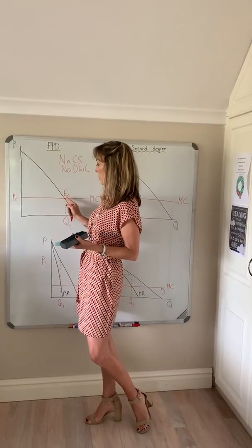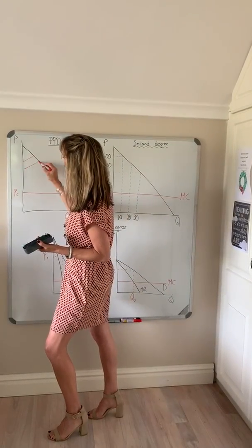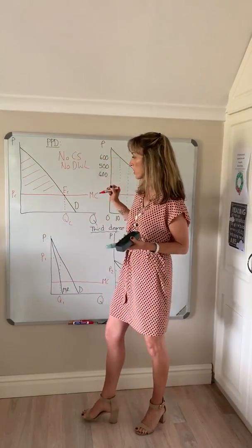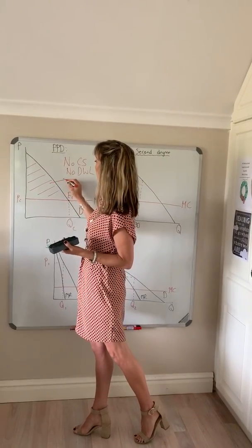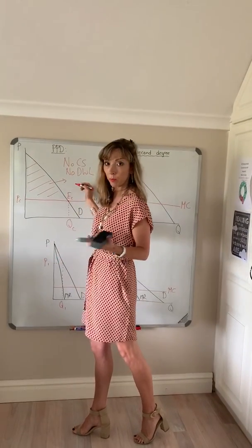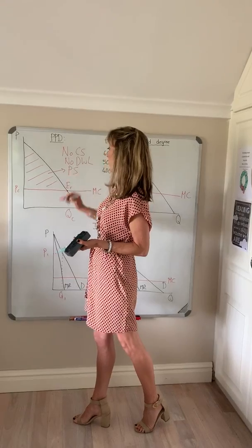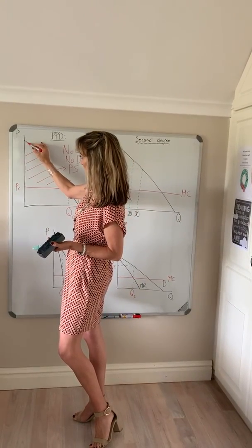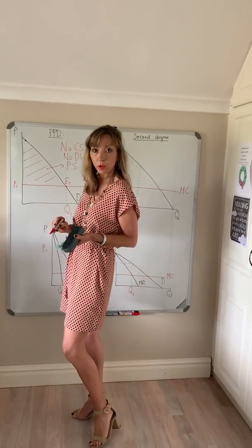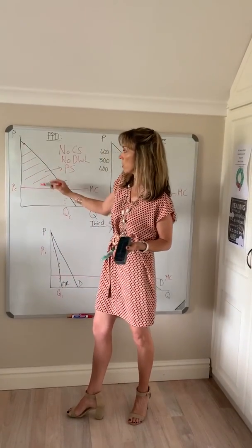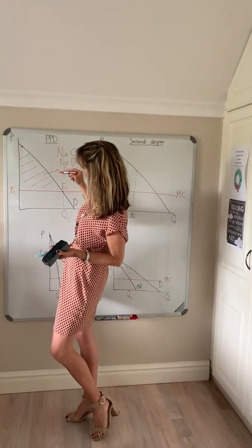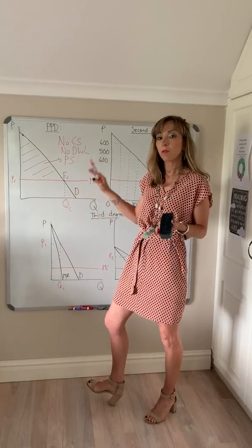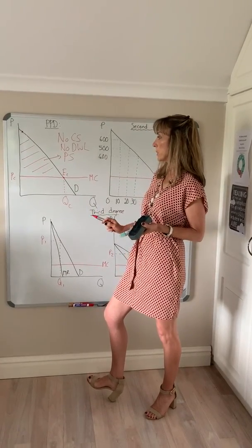They'll produce up to the same point, but if you compare this with perfect competition, all of this area would actually be consumer surplus. Under first degree price discrimination, this entire area becomes producer surplus — the difference between the price people are willing to pay and the cost of producing each unit. So no consumer surplus, no deadweight loss, and same output as under perfect competition.